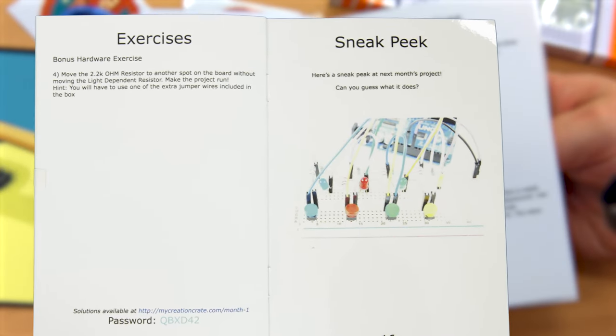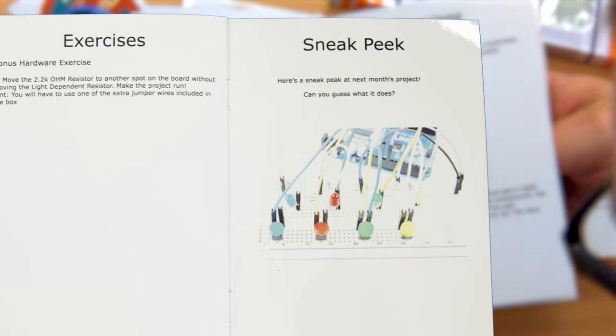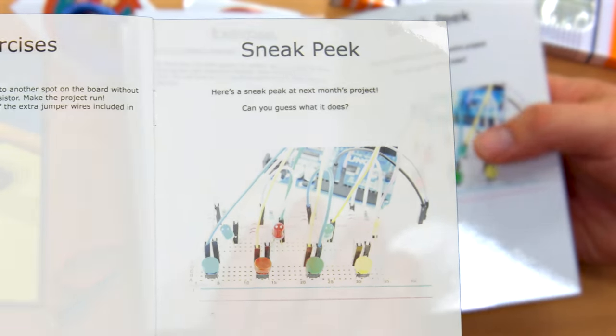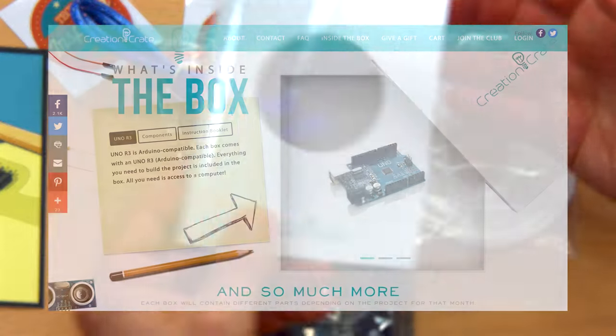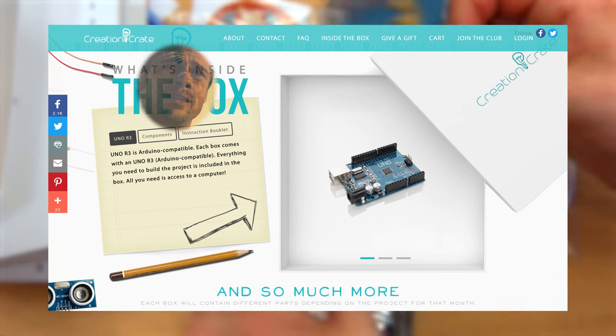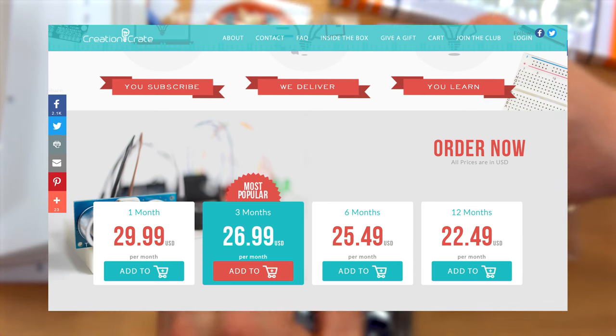The weird thing about it though is that it shows the same Uno, LEDs, breadboard, and jumpers as were used in the mood lamp. However, the Creation Crate website says that each box comes with an Uno R3, and that everything you need is included in the box. So unless I've got this wrong, if you sign up for more than a single month, you'll end up with multiple breadboards, Arduinos - well Unos - and probably other stuff as well.